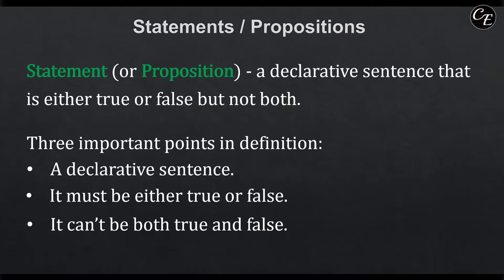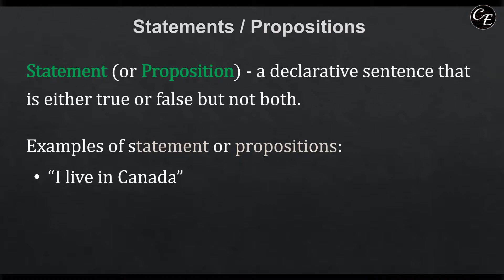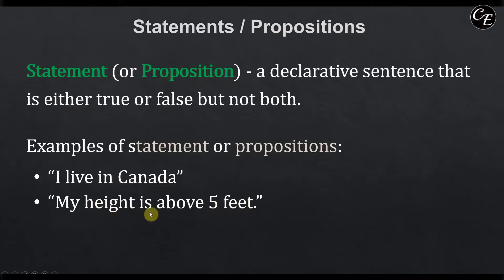Let us have examples to understand this definition fully. 'I live in Canada' — this is a declarative sentence, not a command, interrogative, nor exclamatory. It is either true or false: either you live in Canada or not. It cannot be both true and false. Another example: 'my height is above 5 feet.' This is a declarative sentence — not interrogative, exclamatory, nor a command. It is either true or false: your height is either above 5 feet or not. Satisfying all the requirements in the definition, this is a statement or a proposition.